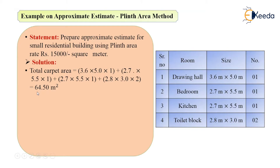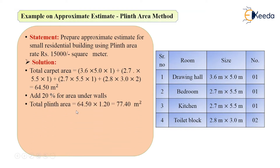This 64.50 m² is the total carpet area of all rooms including the toilet block. But this is just the total carpet area, and the rate given here is a plinth area rate. So I will add an extra 20% for the area under the walls, since only carpet areas are given and wall areas are not included. The total plinth area will be 64.50 multiplied by 1.20 — I multiply by 1.20 to increase the area by 20% — which comes to 77.40 square meters.